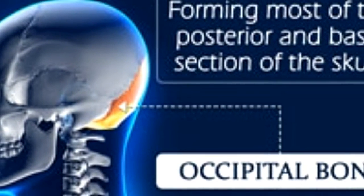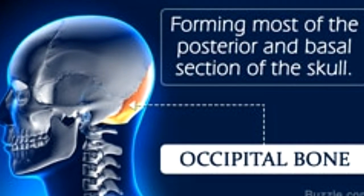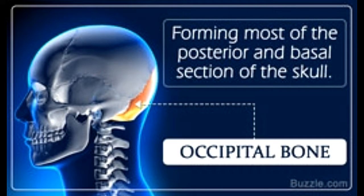Did you know? When we nod, we use the atlanto-occipital joint, which is the joint located between the atlas vertebrae C1 and the occipital bone. This joint helps in the flexion and extension of the neck.